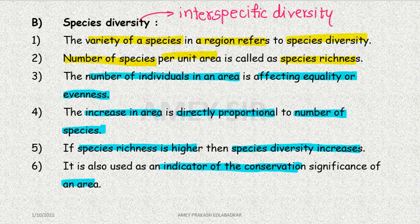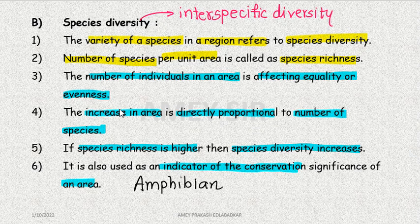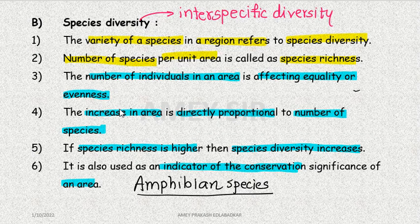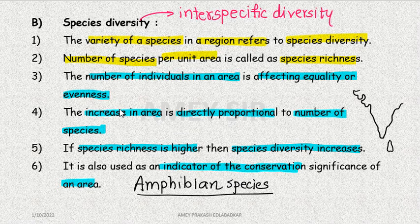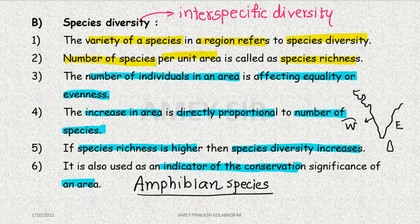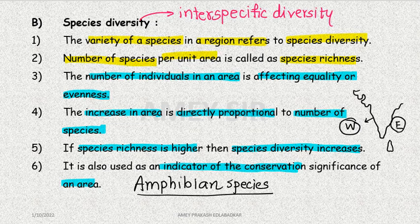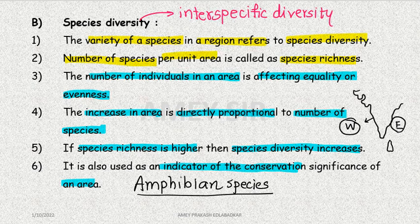Amphibian species diversity is our most important example. When we talk about the subcontinental region, I am creating a small map here — this is the Indian Peninsula, Sri Lanka, the western coastal area, and the eastern coastal area. In the Western Ghats region, amphibians are more in species as compared to the eastern area. Natural, undisturbed tropical forests have more species richness. The richest species diversity is found in about 15 countries, and India is one of them.